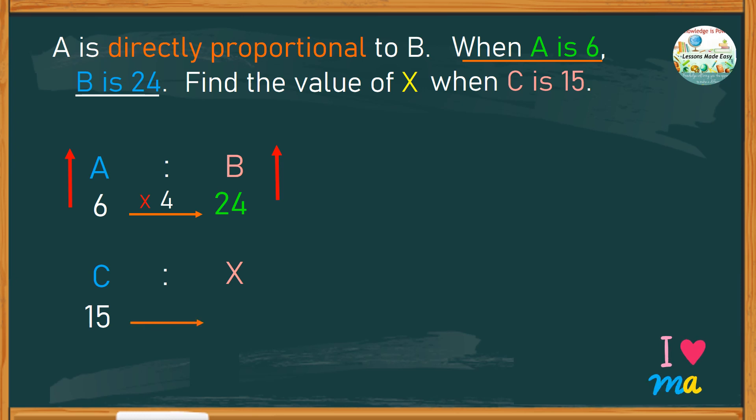to find the value of x, simply multiply 15 by the same proportion or the same number, which is 4. And this would give us 60, as the value of x. Let's see if we get the same answer when we follow the formula.